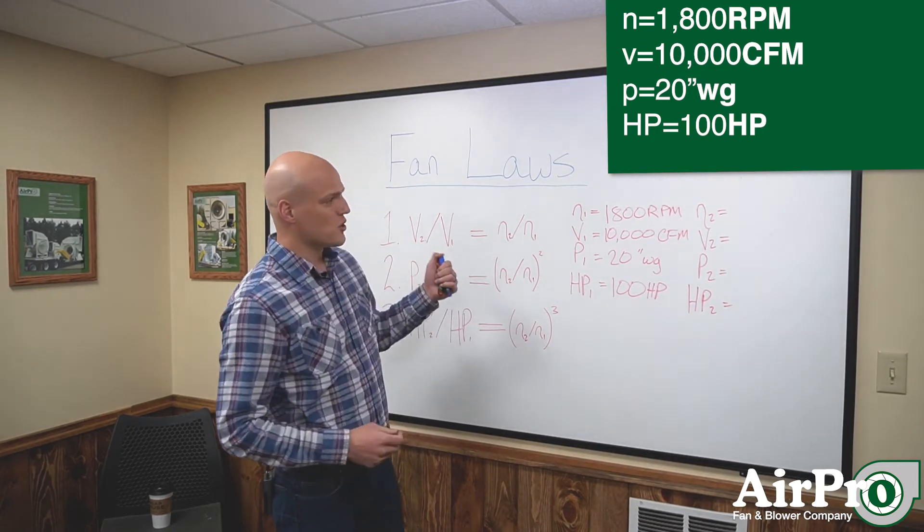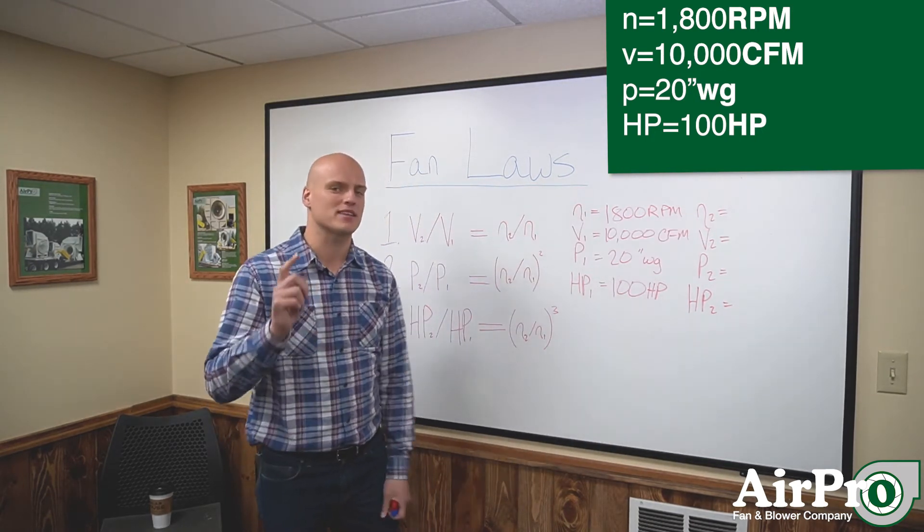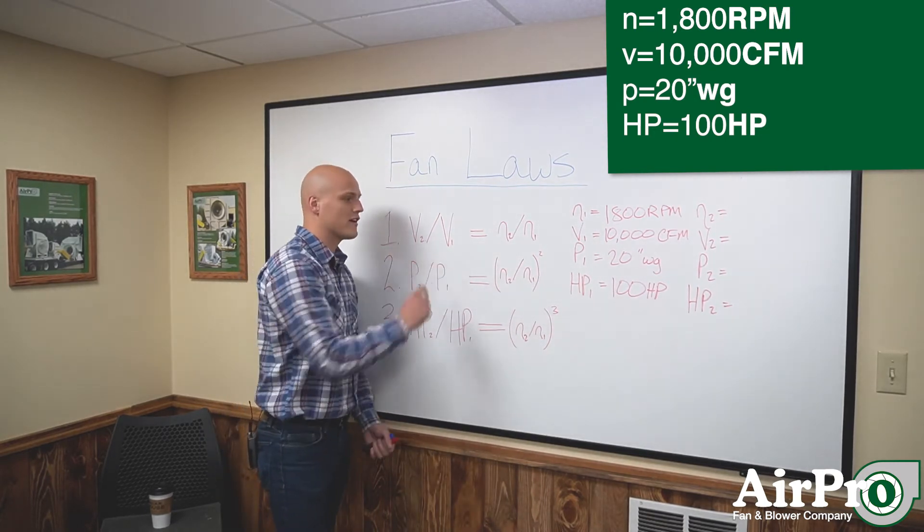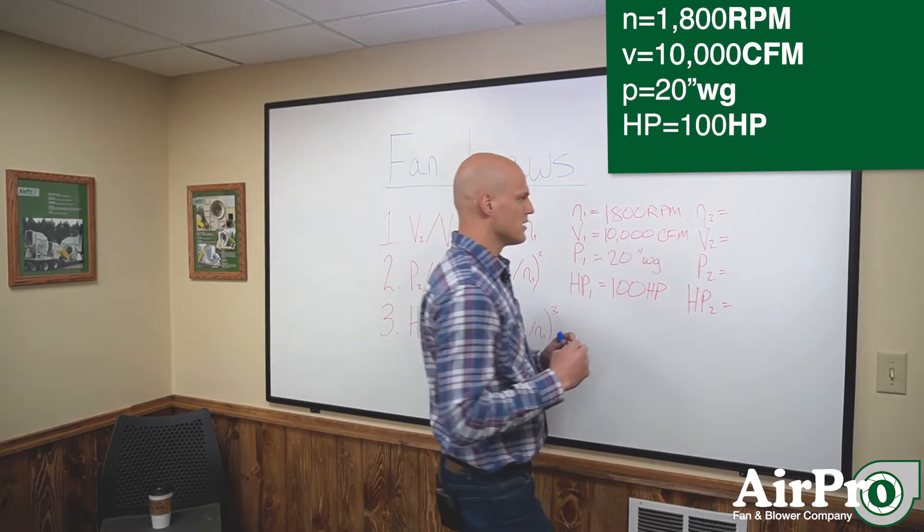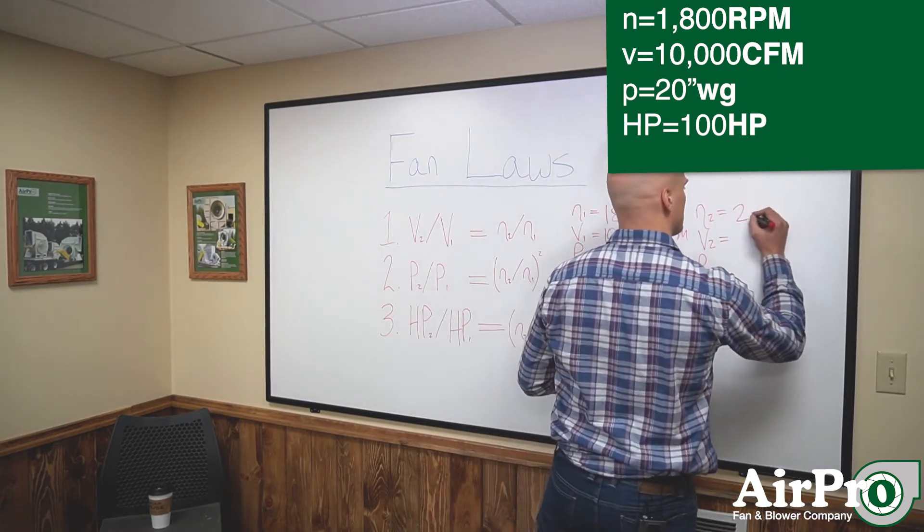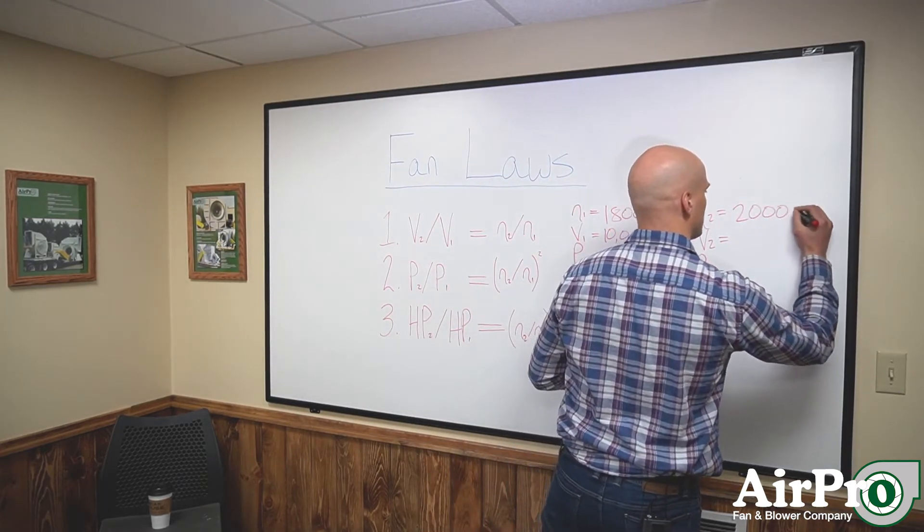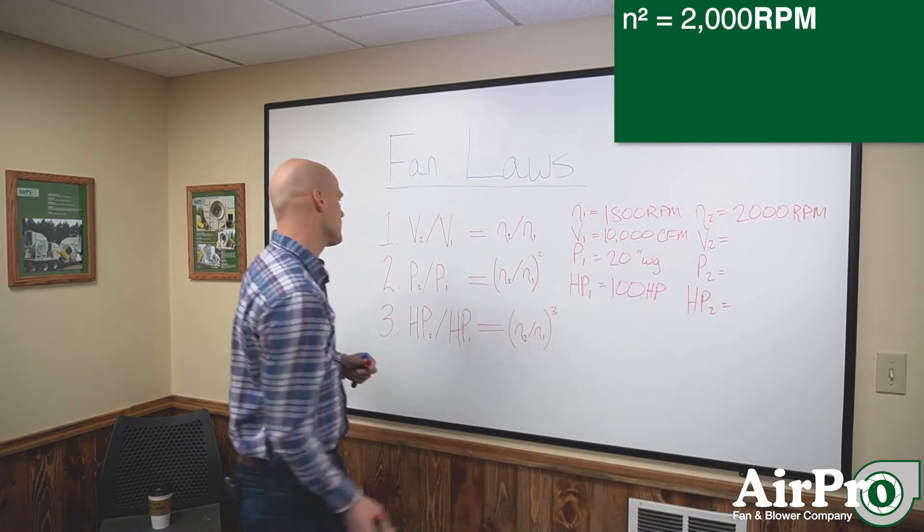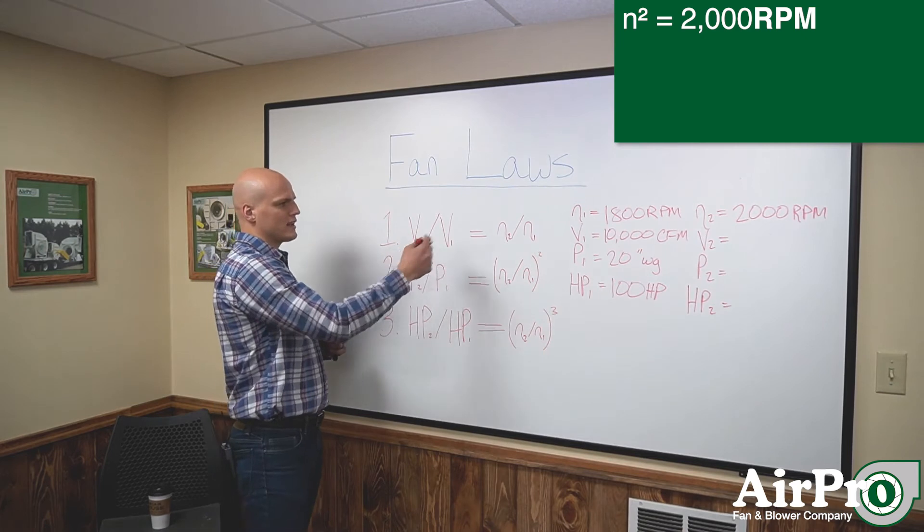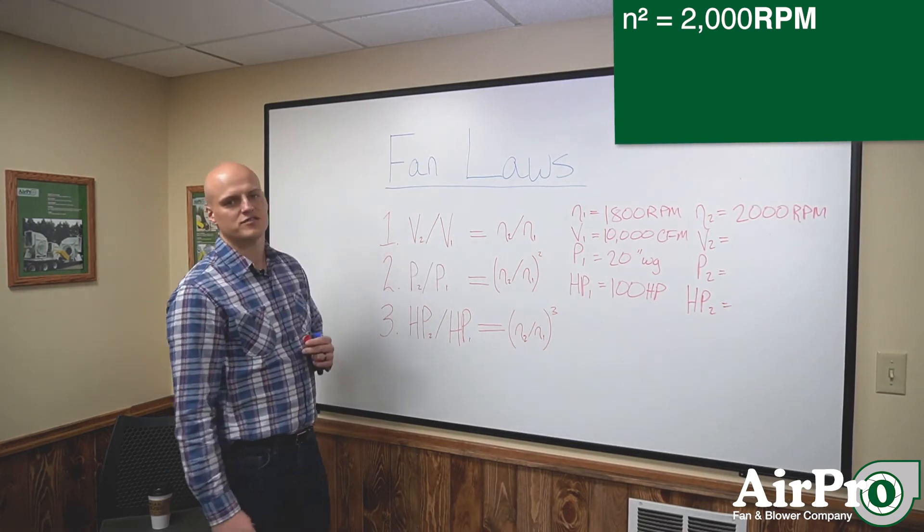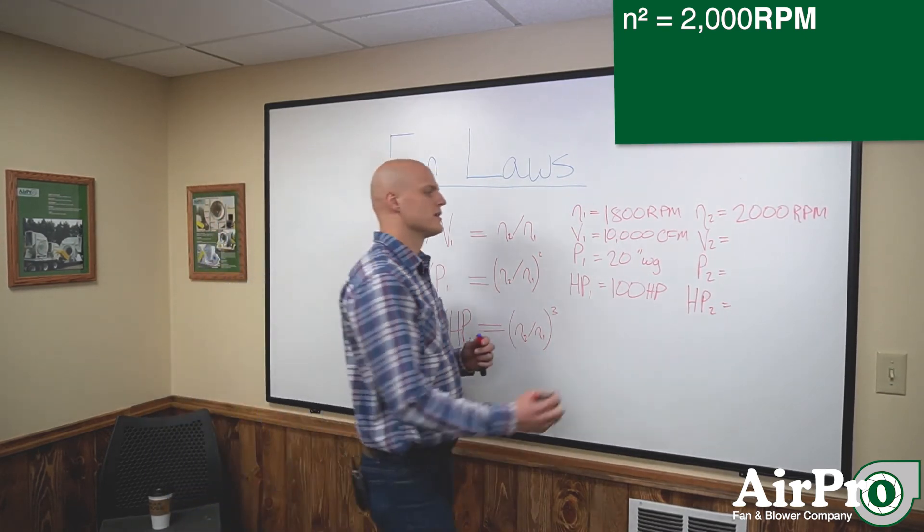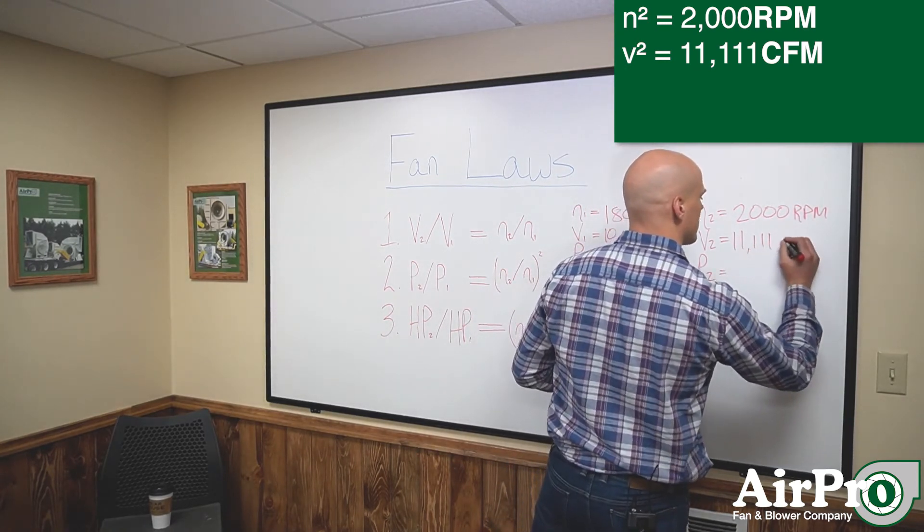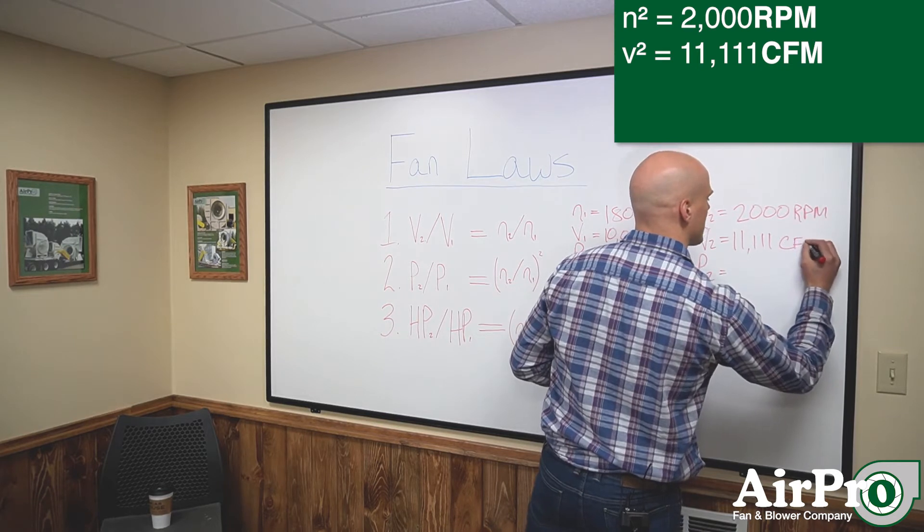We're going to show you what happens if you take your speed up to 2,000 RPM using fan laws. So what happens when we speed the fan up? Volume, we're going to gain a factor of 2,000 to 1,800. That is 11,111 CFM.